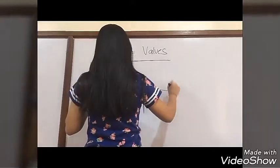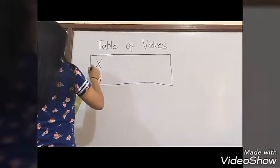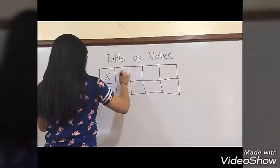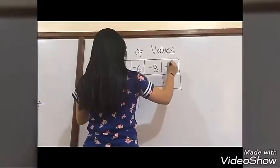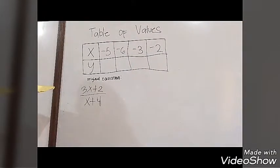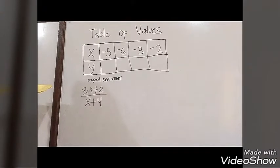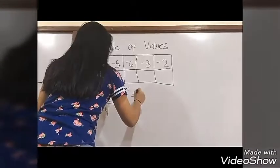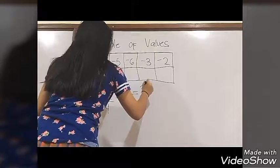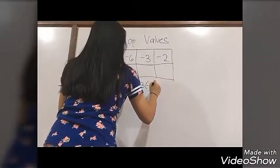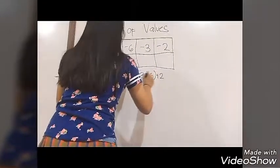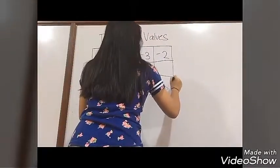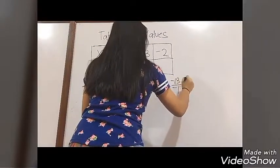Next, we will draw a table of values. We will choose two points from the left side of the vertical asymptote and two from the right side. The chosen points are negative 5, negative 6, negative 3, and negative 2. Substituting negative 5 into the original equation: 3 times negative 5 plus 2 is negative 13, over negative 5 plus 4 is negative 1. Negative 13 divided by negative 1 is positive 13, so y equals 13 for x equals negative 5.